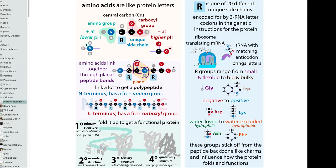Proteins are made up of long chains of amino acids, which are like protein letters. At the heart of these protein letters is the C-alpha, the central carbon, and it's attached to four different things. It has a hydrogen, which we don't really worry about too much - it doesn't do much in the things we're interested in.